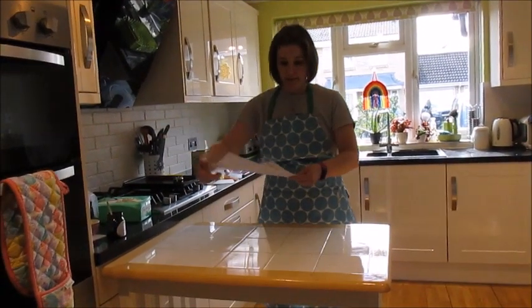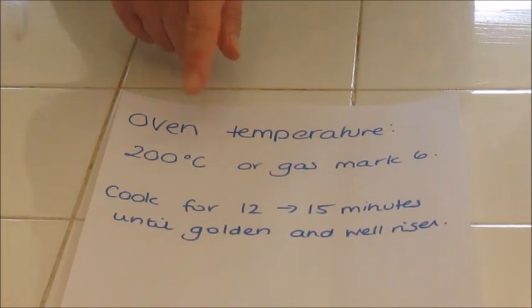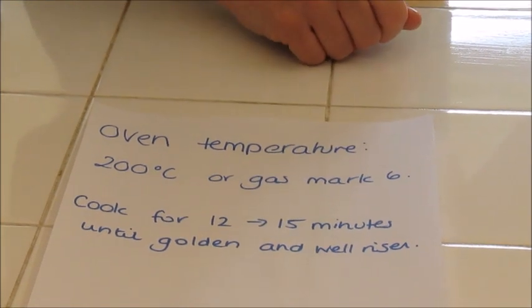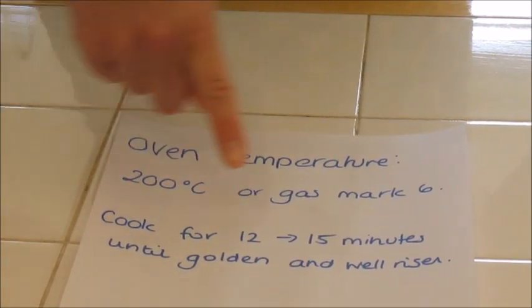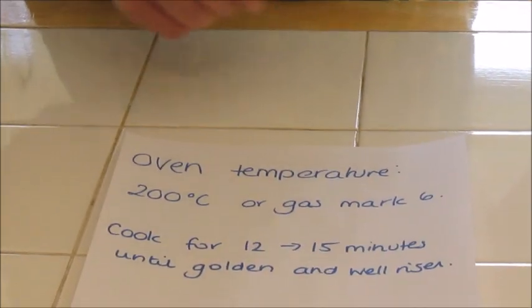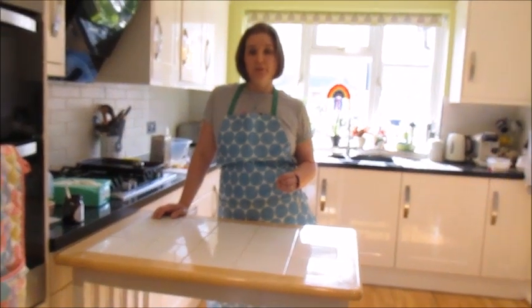The next stage to write in your time plan is to preheat your oven. The oven temperature is 200 degrees for a fan oven, 220 degrees for an electric oven without a fan, or gas mark 6. You'll cook the scones for 12 to 15 minutes or until they're golden and well risen. As we go through the demonstration, I'll give you hints and tips — health and safety points, such as using oven gloves or the correct color chopping boards.